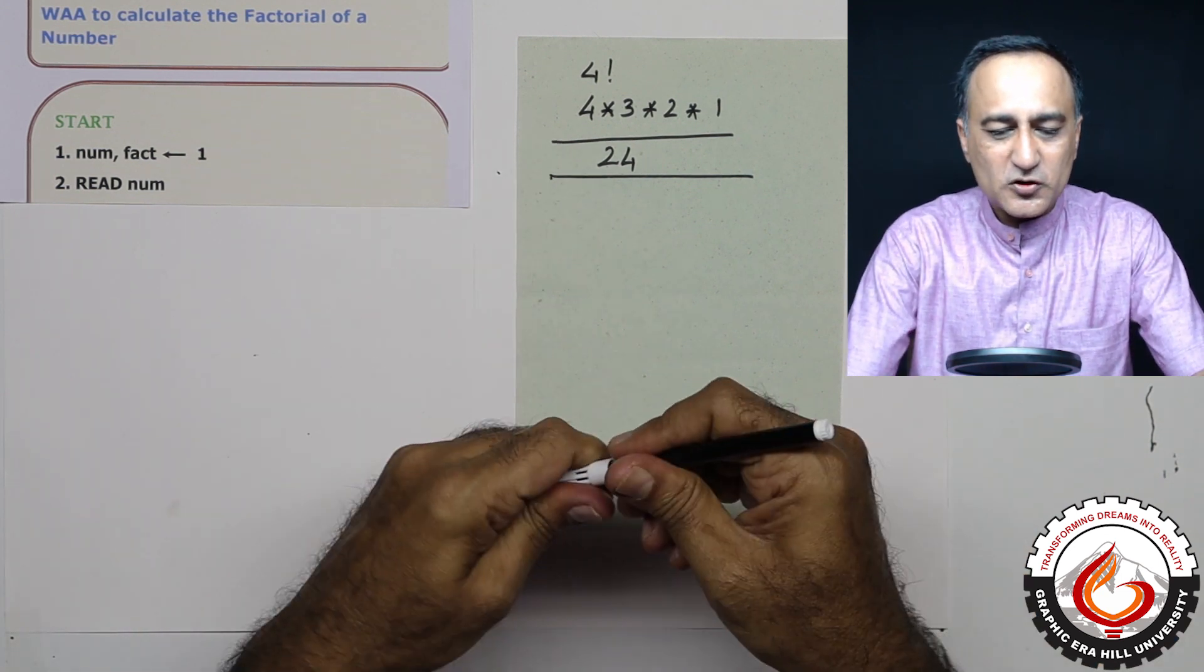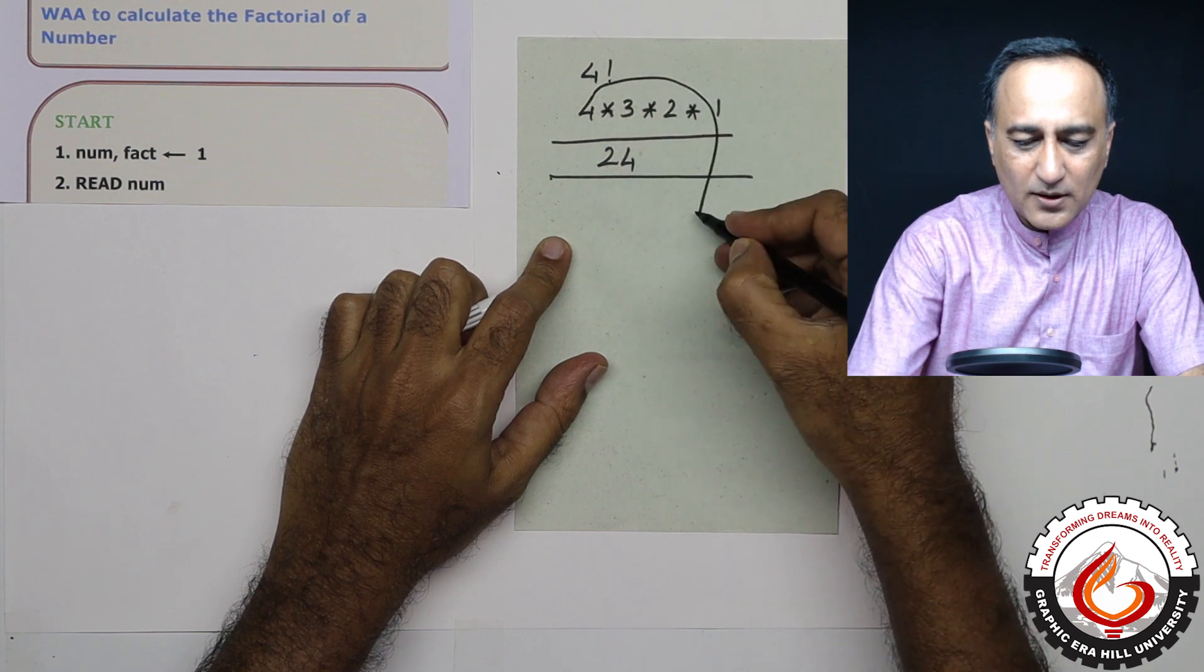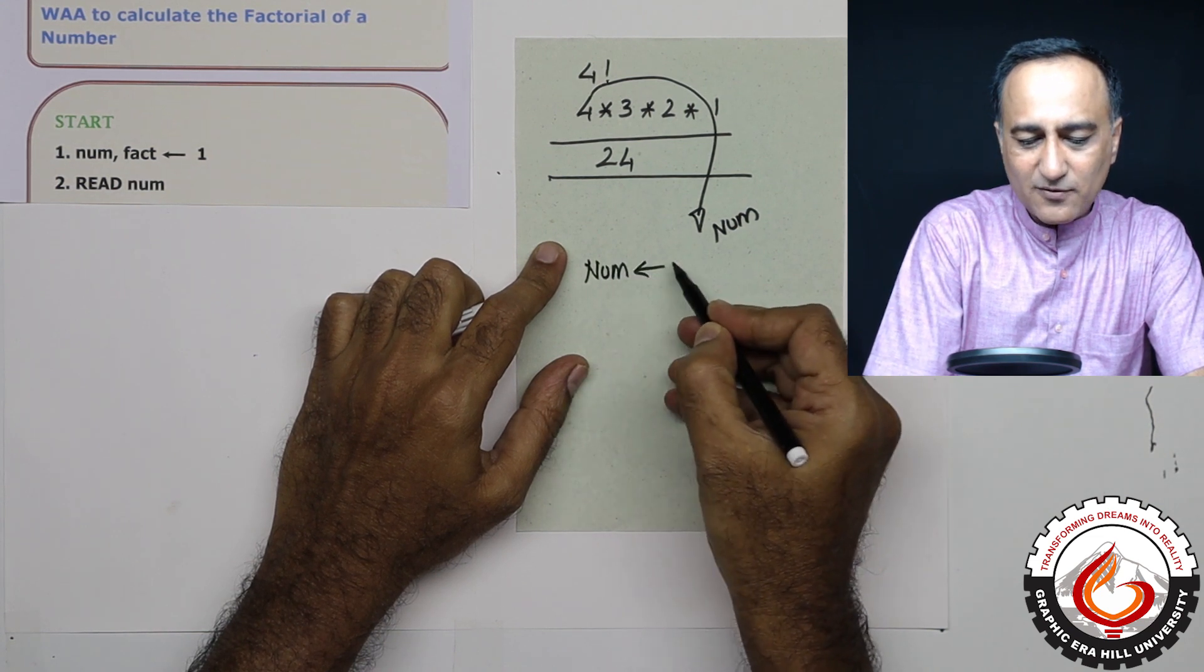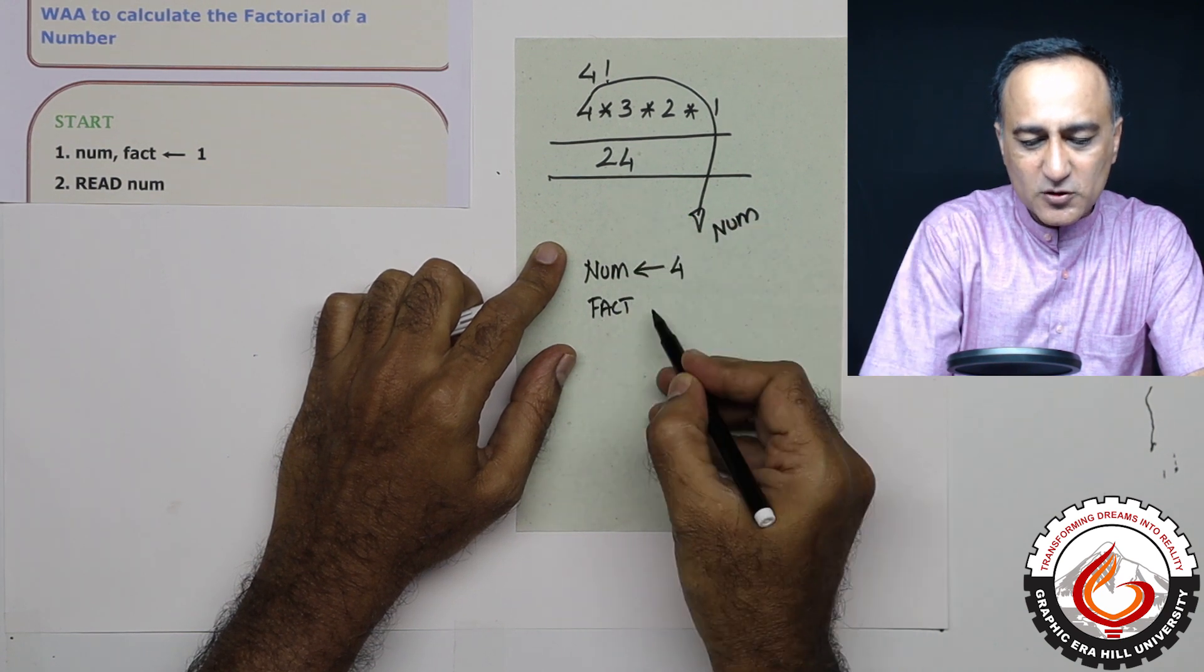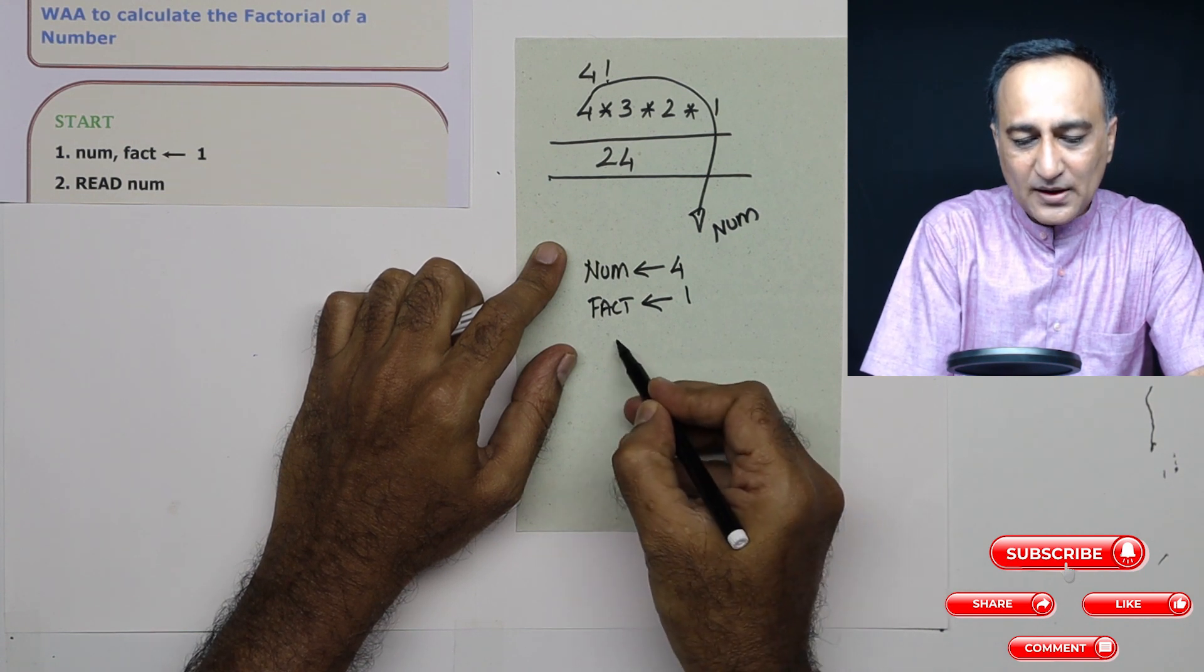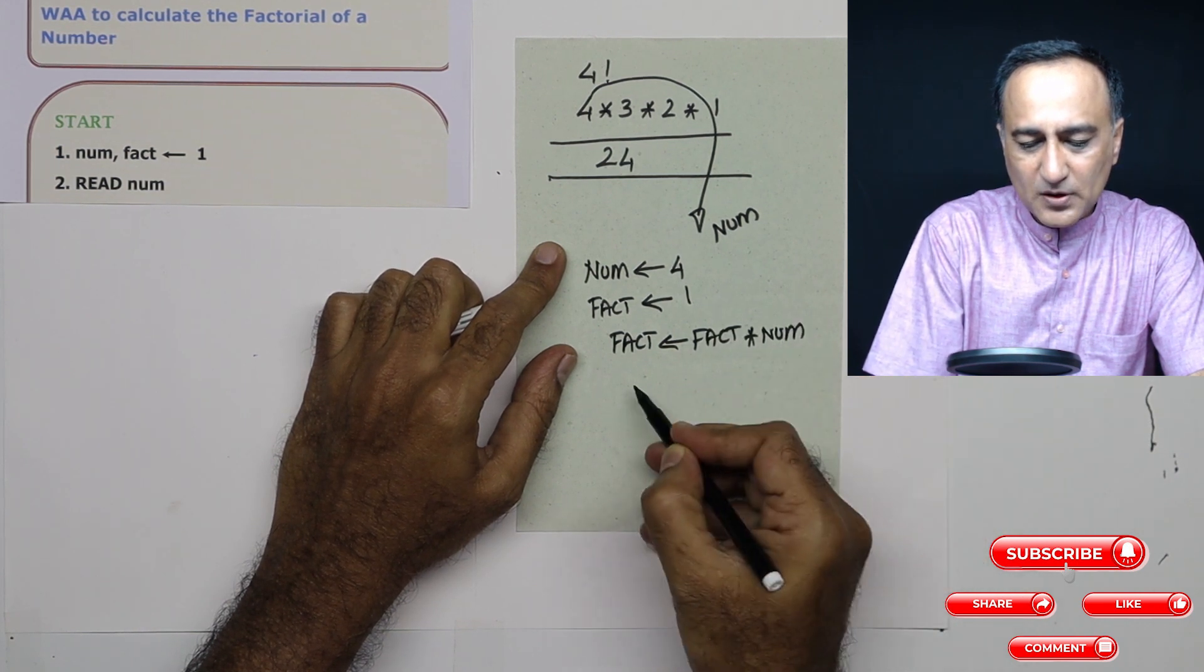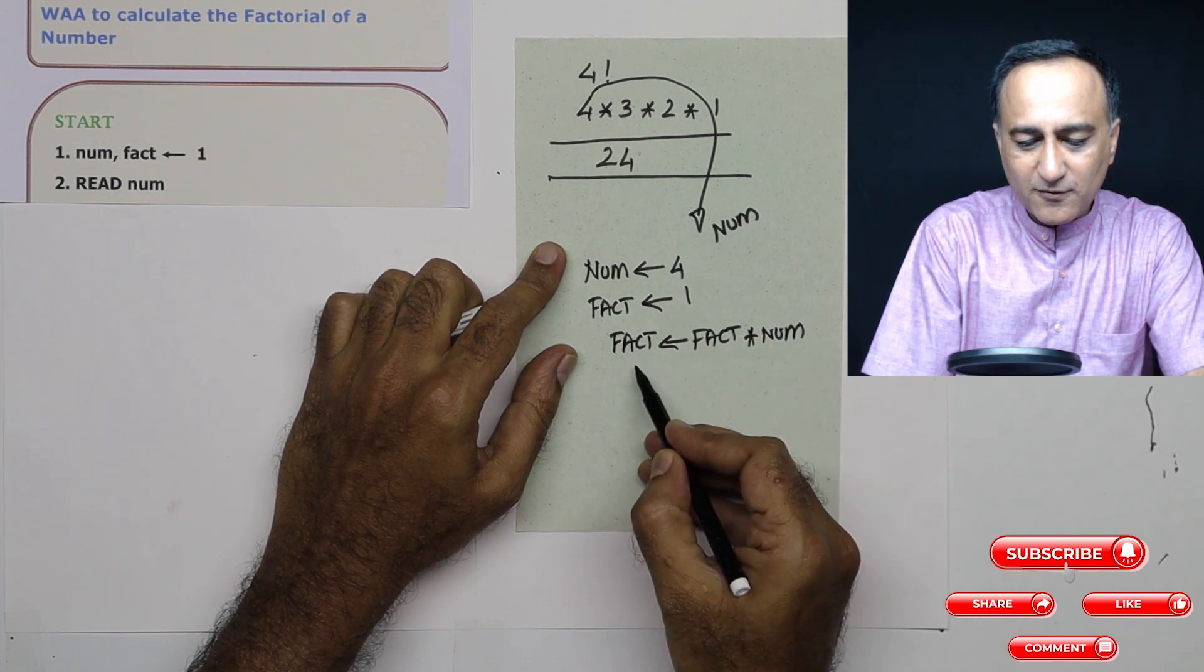So first, what you will do is assume your input number, which you want to calculate the factorial, is called as number. So I will say number is four. Then I'll take a variable called as factorial, which is going to hold this result 24, and I'll give it the value one. And then I'm going to say fact is fact into number. So what I'm doing is first I'm multiplying four into one, so fact becomes four.